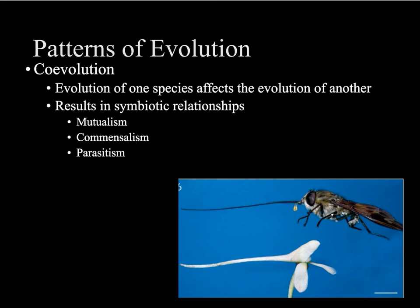Co-evolution is the idea that two very different species go through natural selection with one another, producing symbiotic relationships — often mutualism. For example, an insect with a very long proboscis and a flower with deep nectar are interdependent: if no insect can pollinate the flower, it can't reproduce; and if the insect can't access nectar from any flower, it won't survive. So the evolution of each is tied to the other.